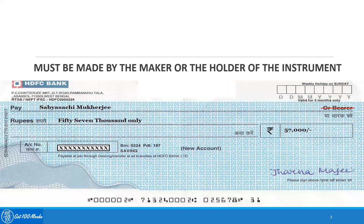The second essential states that the endorsement must be made by the maker or the holder of the instrument. In the case of this check, Charnamaji is the maker of the check — as the account holder, he can endorse it and give it to Sabisachi Mukherjee. If Sabisachi Mukherjee is presenting it to a bank, he can also endorse it as the holder of the check. So either the maker or the holder of the instrument must endorse it.